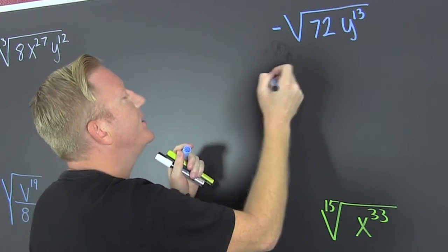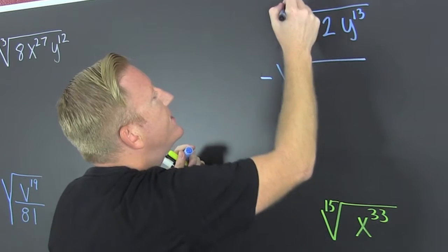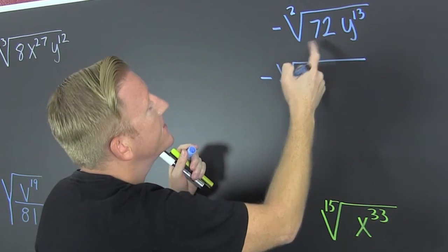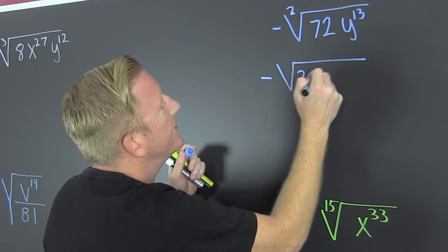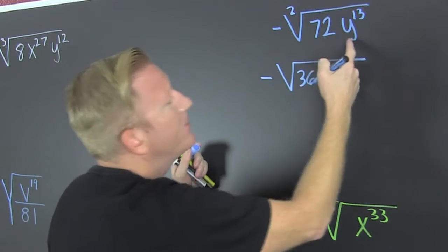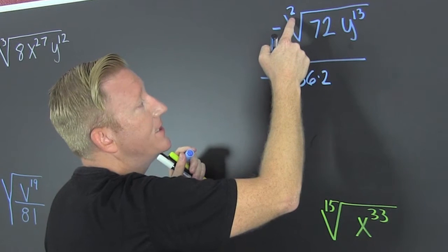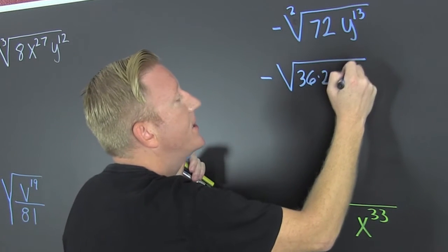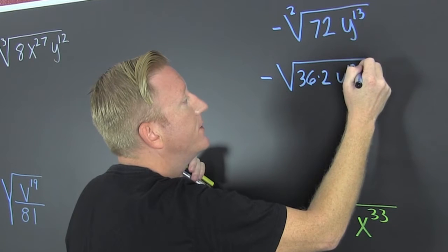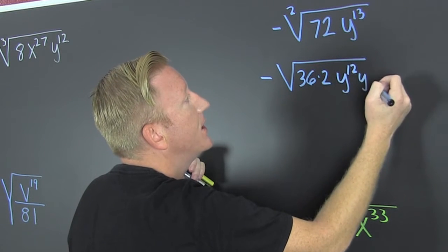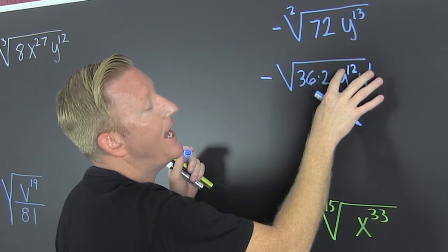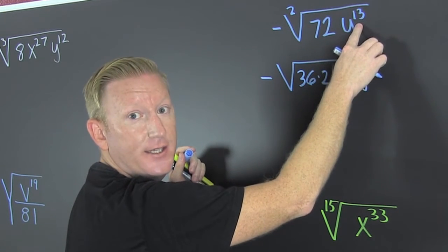What are we doing when we're breaking down these roots? I have a 2 in the index, which means I'm looking for squares. There's a square in there — that's 36 times a deuce because that makes 72. Then I'm looking for even powers because that's going to divide evenly. That's going to be y to the 12 times y to the 1. If you have the same base and you're multiplying, you can add the exponents. That's how you get that 13.